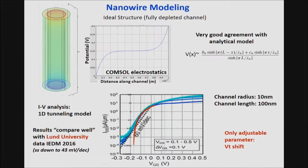These considerations can also be applied to the nanowire FET. Most of us are familiar with the exciting results presented by Lund University at the last IEDM, reaching 43 millivolts per decade. Going through the electrostatics for such a nanowire device, we get very good agreement with the analytical model, and the tunneling potential is very similar to an exponential.